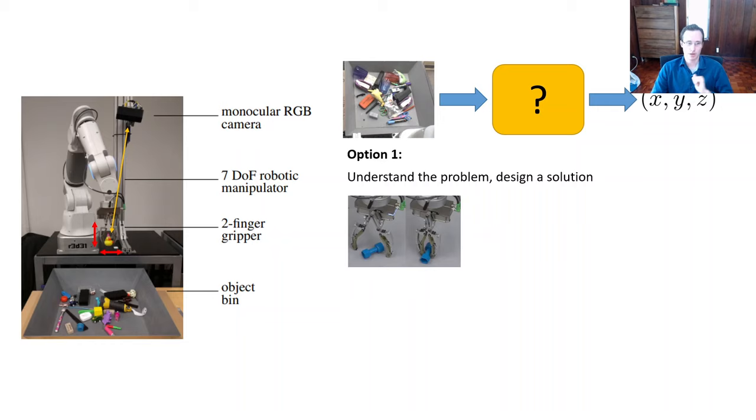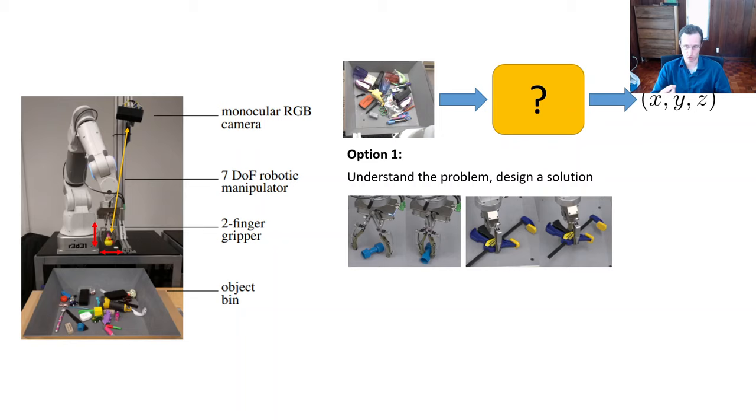So if you want to really understand the problem and design a solution manually, maybe rigid objects are fairly straightforward to pick up. You just put the fingers on either side. But if the object is awkwardly shaped and has a complex mass distribution, then you need to really make sure you pick it up closer to the center of mass so that it doesn't fall out of the gripper. And if the object is soft and deformable, then an entirely different set of strategies might be more appropriate, like pinching it.